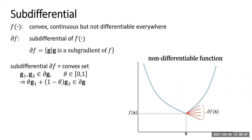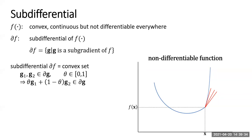The sub-differential is the set of all sub-gradients at a point — the sub-differential of the function at the point x. It can be easily shown that the sub-differential is a convex set. Because if you take any two points g1 and g2 which are both sub-gradients — elements of the sub-differential — then any convex combination theta times g1 plus (1 minus theta) times g2 also belongs to the sub-differential. All three lines shown here are sub-gradients of this non-differentiable function at point x.